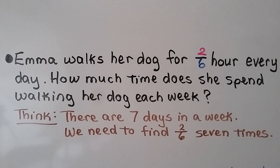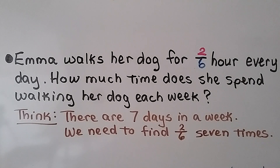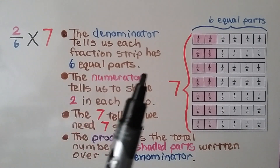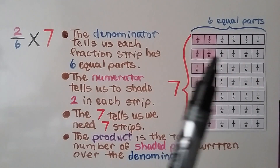Emma walks her dog for 2 sixths hour every day. How much time does she spend walking her dog each week? Well, there's 7 days in a week. She's doing it 2 sixths hour every day, so we need to find 2 sixths 7 times — that's 2 sixths times 7. The denominator, this 6, tells us that each fraction strip has 6 equal parts.